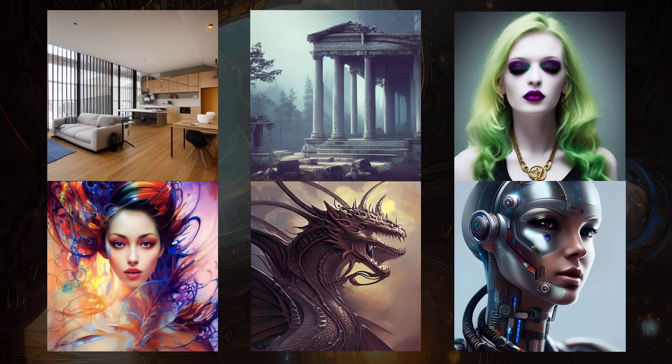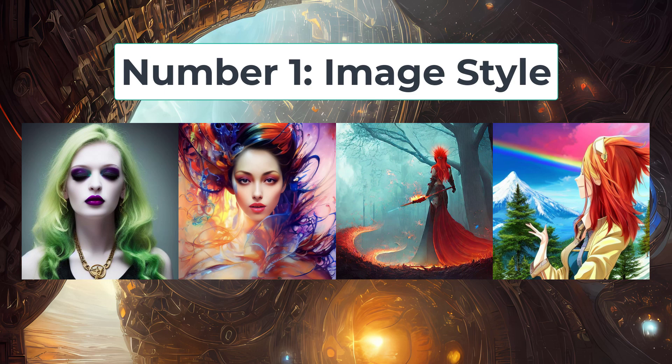For generating images of humans, there are three important components of a prompt. Number one is the image style — what type of image you want. Examples can be photorealistic, close-up illustration, full body illustration, portraits, or anything similar.